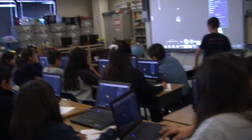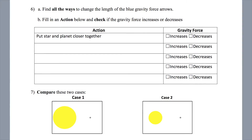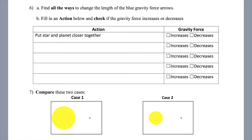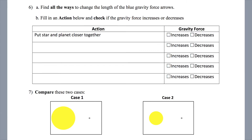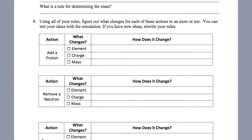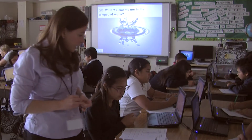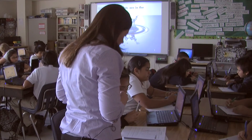One way to quickly check how students are doing is by using concept tables in your activity to organize student responses. For instance, in Build an Atom, if I add a proton, how does that change the charge — increase, decrease, stay the same? That allows a facilitator to quickly see if students are understanding the material with a quick glance at the tables instead of having to read a long sentence.